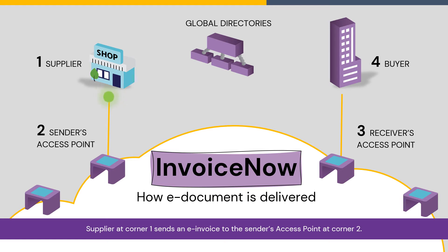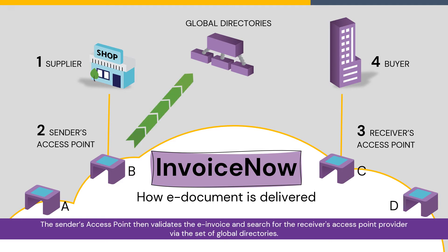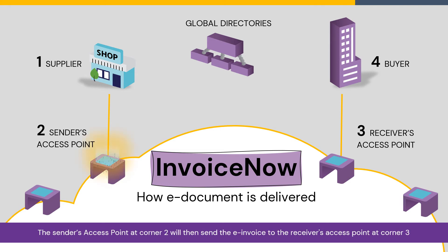Firstly, the supplier at corner one sends an e-invoice to the sender's access point at corner two. At this point, the sender's access point then validates the e-invoice and searches for the receiver's access point provider via the set of global directories.